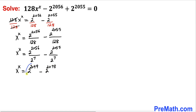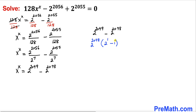Now let's focus on the right hand side. We can see that 2 power 2048 is common to both terms, so let me factor it out. Factoring out 2 power 2048, we are left with 2 power 1 minus 1. Since 2 power 1 is 2, that gives 2 minus 1 which equals 1. Therefore the right hand side simplifies to 2 power 2048 times 1, which is just 2 power 2048.